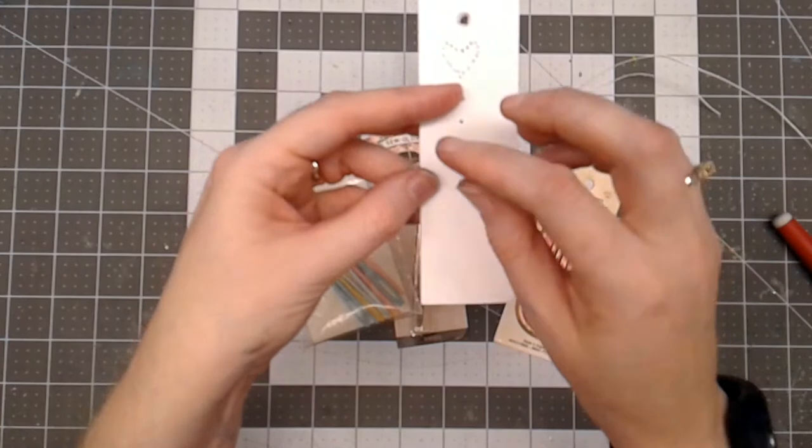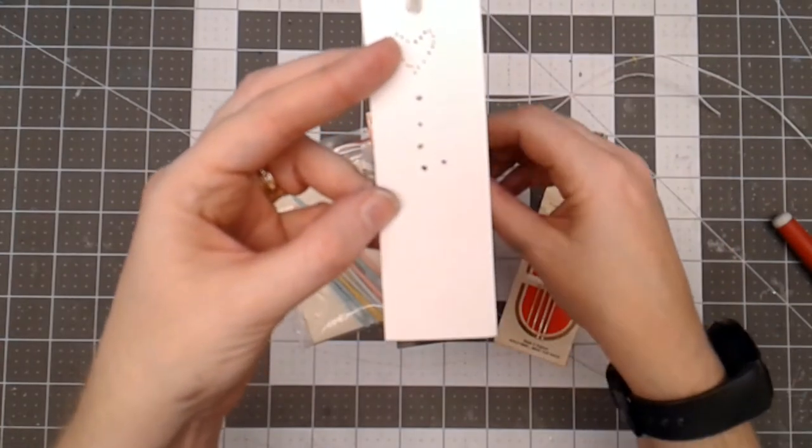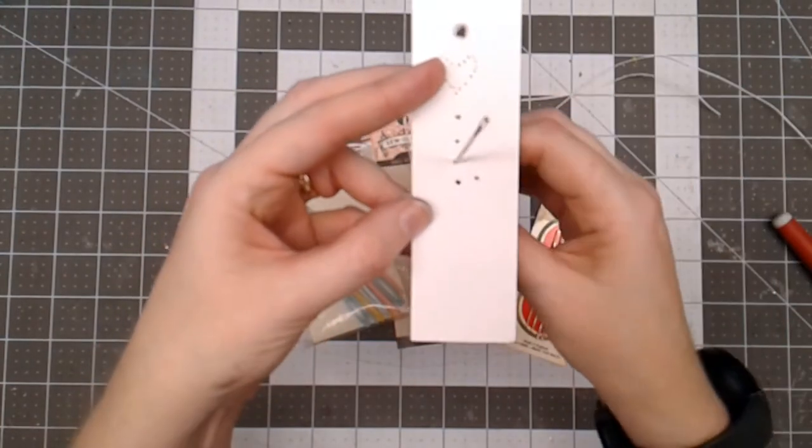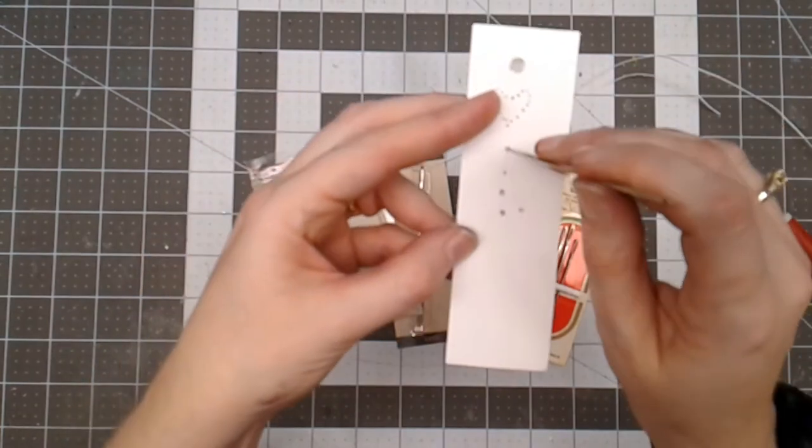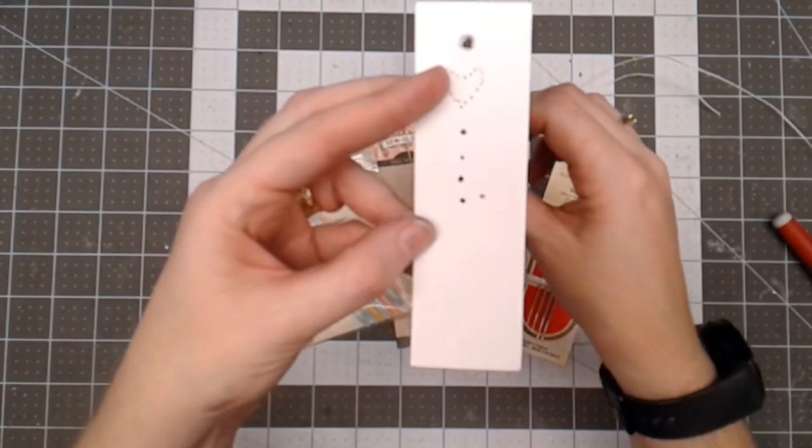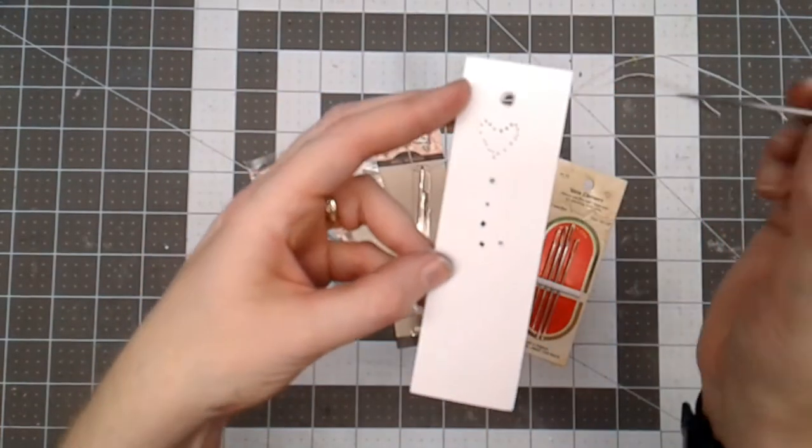So for example, this was a hole that was made with the Tim Holtz and it goes right through that. And then this was my old style and then this one up here was a bookbinders.